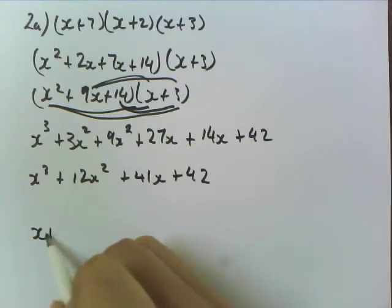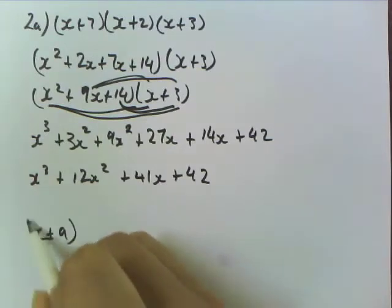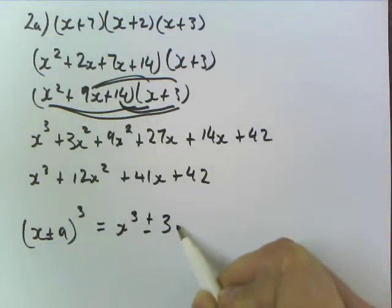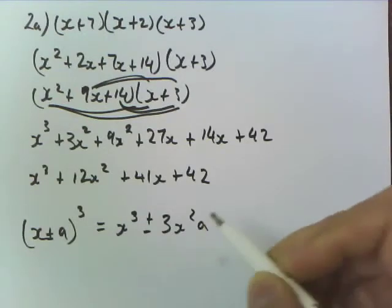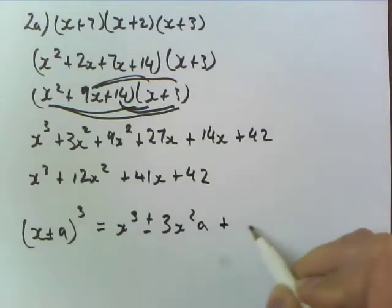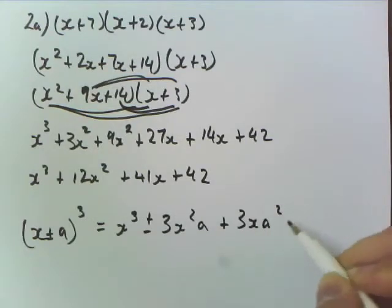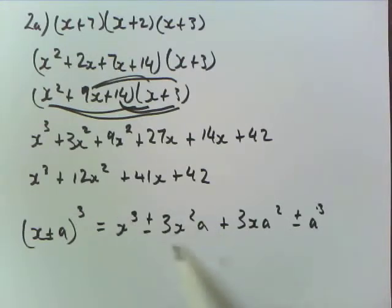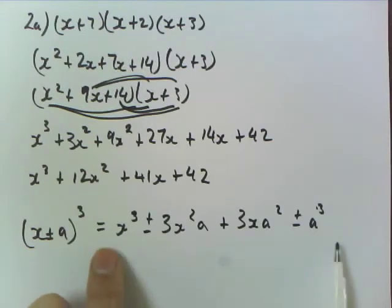So if you've got x plus or minus a cubed, you end up with x cubed plus or minus 3x squared a, plus 3x a squared, and then plus or minus a cubed. So basically it's 1, 3, 3, 1 with x cubed, x squared, x, and a cubed, a squared, a. So they sort of work from the outside in. So cubes, squares, singles.